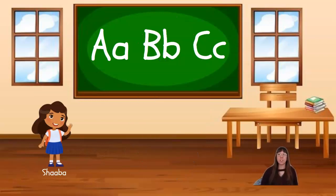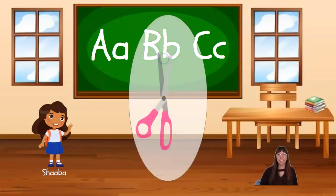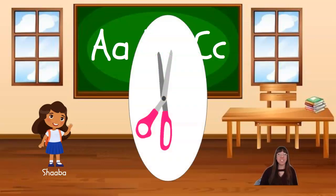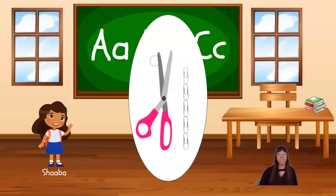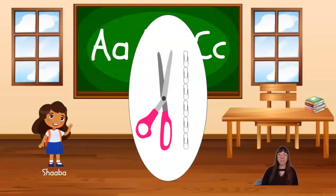Shabba, it's your turn. What did you find us to measure? A pair of scissors. Wonderful. Let's measure Shabba's pair of scissors by starting at the bottom, putting our first paperclip there, and then continuing to add paperclips until we reach the top. That will tell us the height of the scissors in paperclips. One, two, three, four, five, six. Our pair of scissors looks like it's about six paperclips tall. Thank you, Shabba.